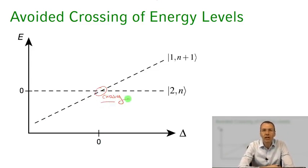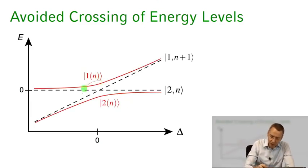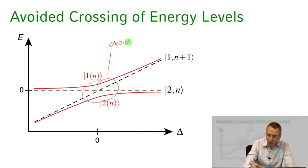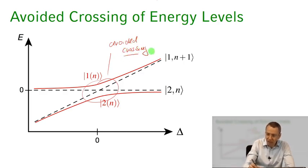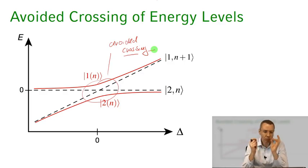If we calculate the eigenstates with the interaction Hamiltonian as a function of detuning, this crossing turns into what we call an avoided crossing. This is something you find very often in physics: whenever you have energy levels that cross when there's no coupling between the two systems, and you turn on an interaction Hamiltonian, the crossing turns into an avoided crossing — the energy levels seem to repel each other.